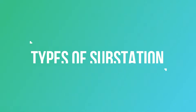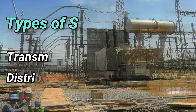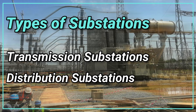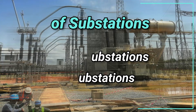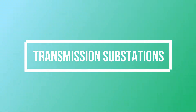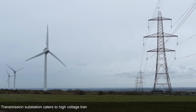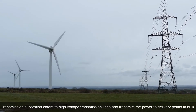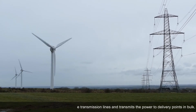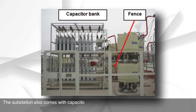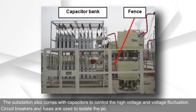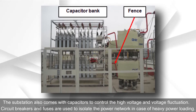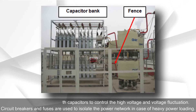The key types of substations are transmission substations and distribution substations. Transmission substations cater to high voltage transmission lines and transmit power to delivery points. They come with capacitors to control high voltage and voltage fluctuation, and circuit breakers and fuses are used to isolate the power network in case of heavy power loading.